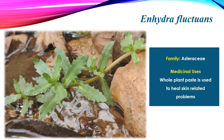Next is Enhydra fluctuans, which is also a leafy vegetable. The local and tribal community uses the leaves of this plant as a leafy vegetable. It belongs to the family Asteraceae, and the whole plant paste is used to heal skin-related problems.